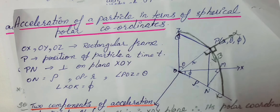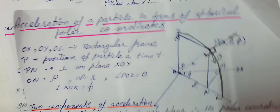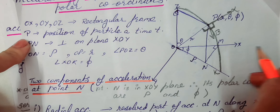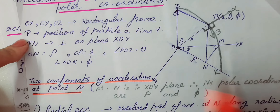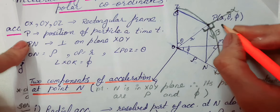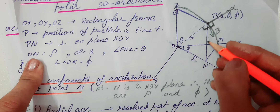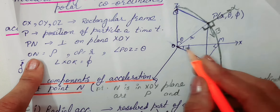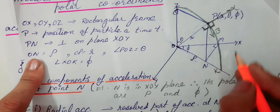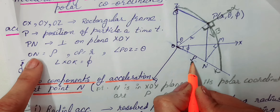Next topic: Acceleration of a particle in terms of spherical polar coordinates. उसके लिए एक rectangular frame consider करते हैं — OX, OY, OZ तीन axes। P को position of particle at any time मान लिया है। PN, X-O-Y plane पर perpendicular draw करेंगे, तो PN perpendicular है on X-O-Y plane। ON की value हमने ρ (rho) मान ली है।